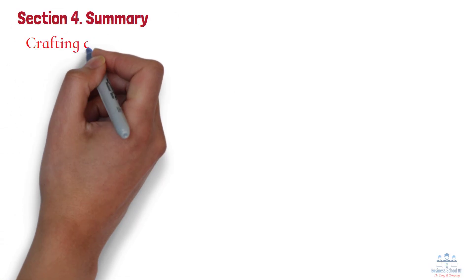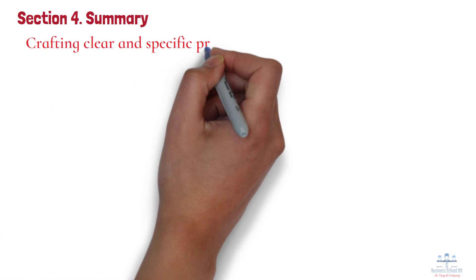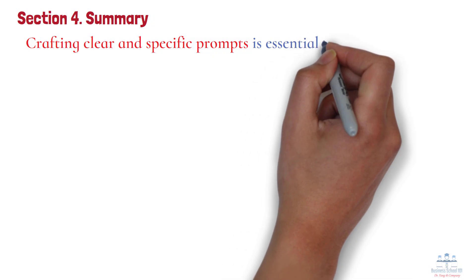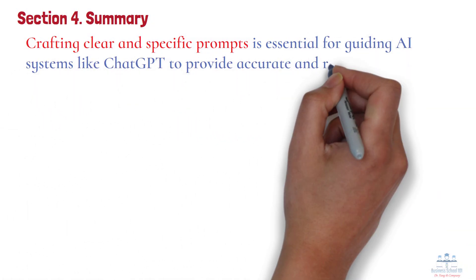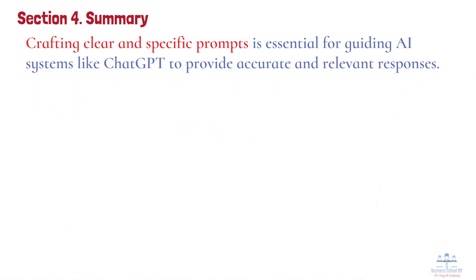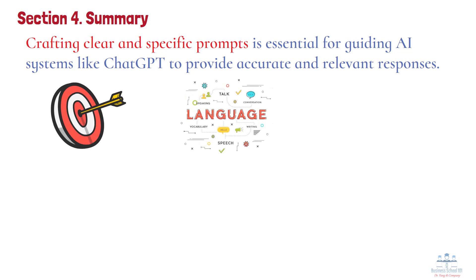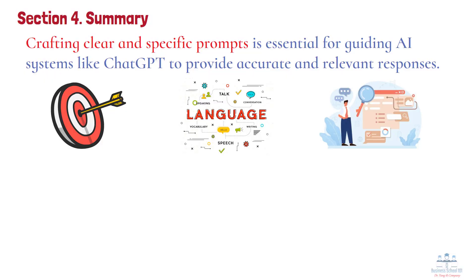Section 4: Summary. To sum up, crafting clear and specific prompts is essential for guiding AI systems like ChatGPT to provide accurate and relevant responses. Effective prompts have a clear objective, use precise language, provide relevant context, and specify the desired format or style of the output.